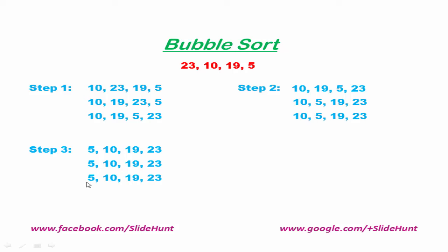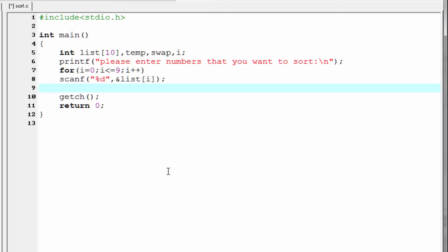It took three steps to sort the numbers, but the number of steps required is not fixed — it depends on the order in which we take the numbers. If we take the numbers in the order 10, 5, 19, 23, then we need only one step. Let's move to the coding.